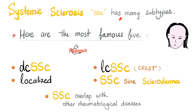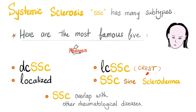Systemic sclerosis has many, many subtypes. I'll give you the most famous five. Diffuse cutaneous systemic sclerosis, also known as progressive scleroderma or systemic scleroderma. Limited cutaneous systemic sclerosis, formerly CREST syndrome.